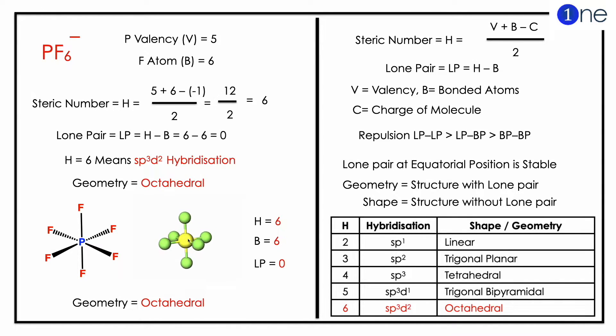To find the hybridization, you should know the steric number, which equals P plus B minus C, whole divided by 2.